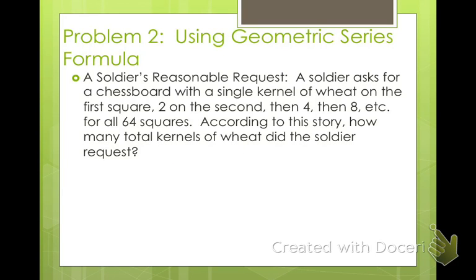In the book there's a famous story of a soldier who rescues a king during a battle, and the king says he will grant anything within reason from the riches of the kingdom. The soldier asks for a chess board — which has 64 squares — and requests 1 kernel of wheat on the first square, 2 on the second, 4 on the third, then 8, and so on until all 64 squares are filled. How many total kernels of wheat did the soldier request?